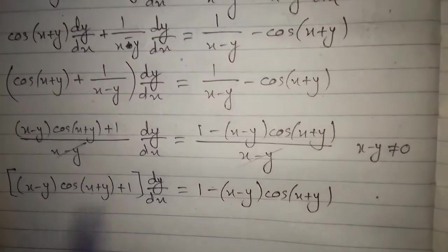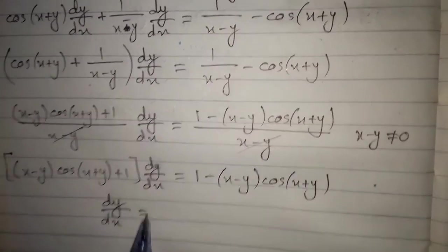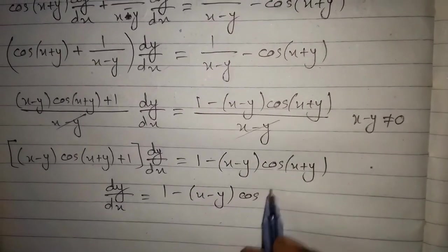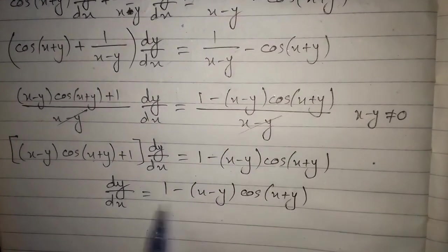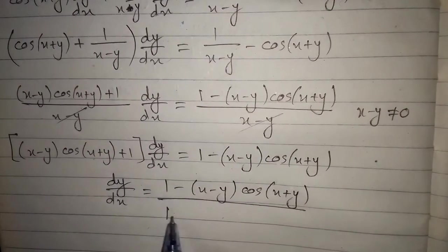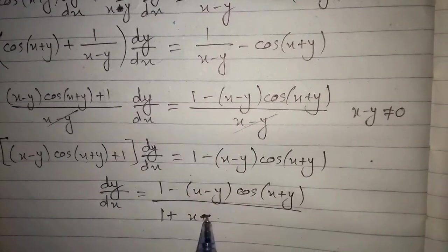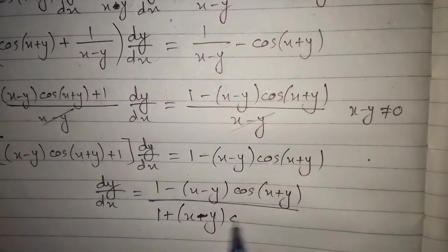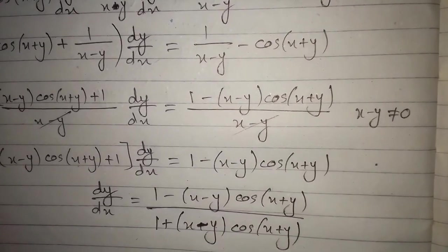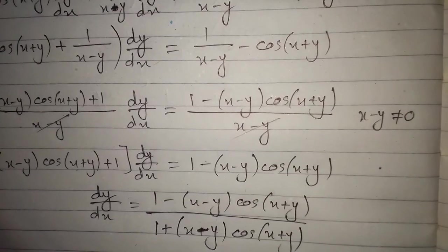Taking the bracket to the other side, dy/dx equals 1 minus x minus y times cos of x plus y, divided by 1 plus x minus y times cos of x plus y. This is the final answer.